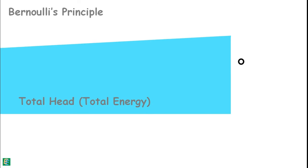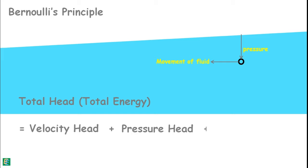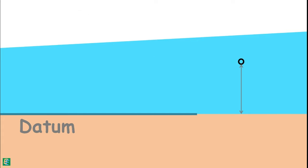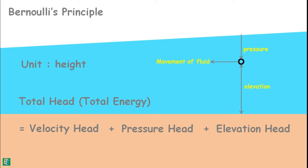From Bernoulli's principle, the total head or total energy at a given point in the fluid is the energy due to the movement of the fluid which we call velocity head, plus energy from the pressure in the fluid which is called pressure head, plus energy from the height of the fluid relative to any arbitrary datum, which is called elevation head. Datum can be understood as any reference line or plane. Here z represents the height or elevation of the point of consideration from our considered datum. This total head has the unit of height, such as meters.